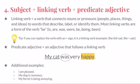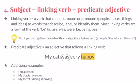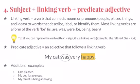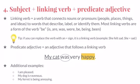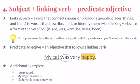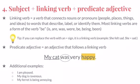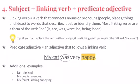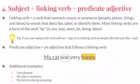This equal sign trick will not work with action verbs. For example, take the sentence 'The cat licked my melting ice cream cone.' If we replace 'licked' with an equal sign, we get 'the cat equals my melting ice cream cone' — obviously, a cat is not equal to an ice cream cone. Finally, this pattern ends with a predicate adjective, which is simply an adjective that follows a linking verb.